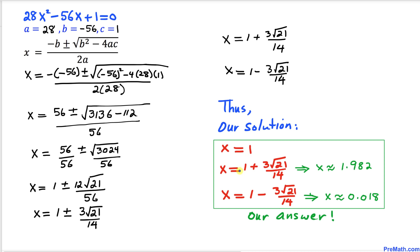So our complete solution is x equals 1, x equals (1 + 3√21) / 14, and x equals (1 − 3√21) / 14. In decimal form, those are our approximate values as well. Thanks for watching, and please don't forget to subscribe to my channel for more exciting videos — bye!